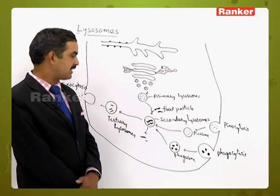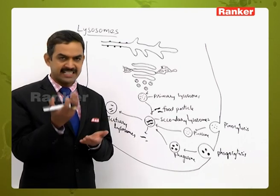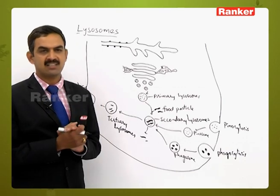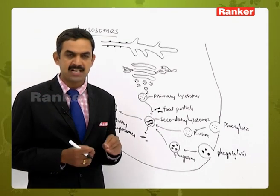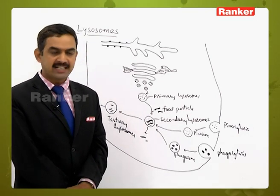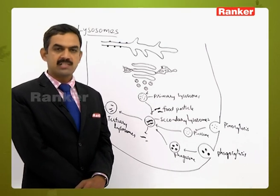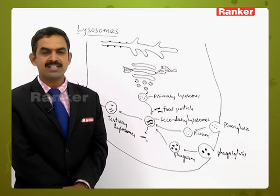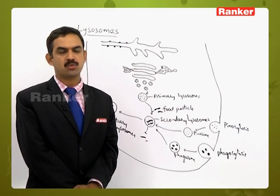Lysosomes are concerned not only with the digestion of food particles but also with the digestion of various liquid contents and solid materials entering the cell. They digest various types of materials — whether food, foreign particles, harmful substances, liquid content, or solid material. This digestion takes place inside the lysosome and is called intracellular digestion. The three types of lysosomes — primary, secondary, and tertiary — are formed in the due course of changes.